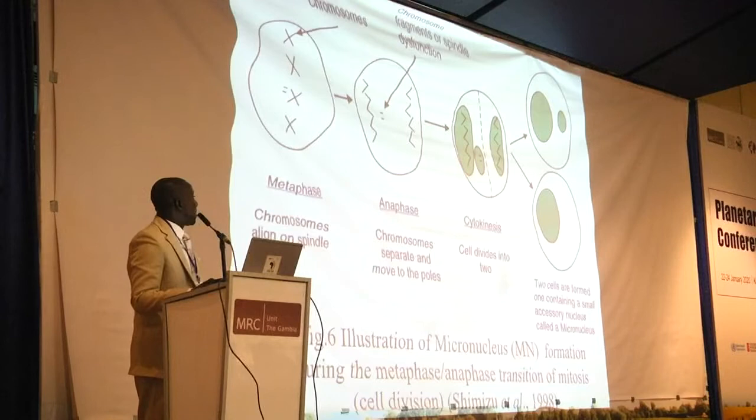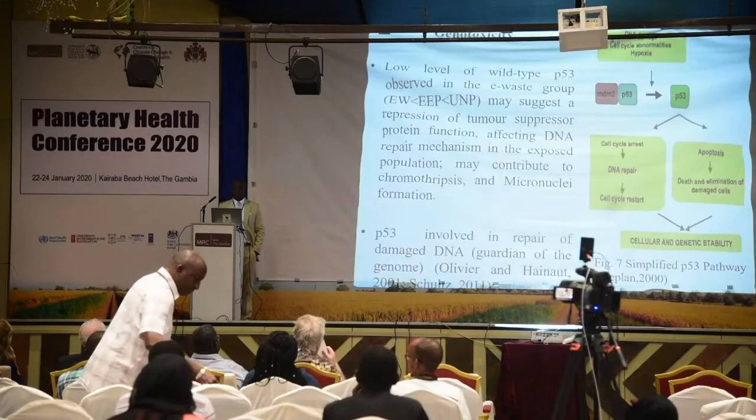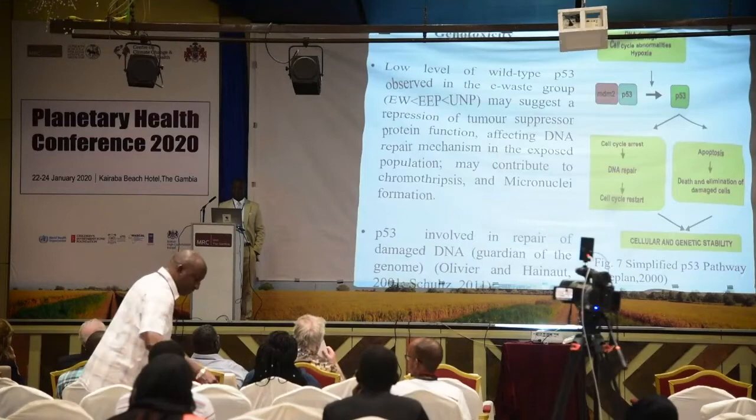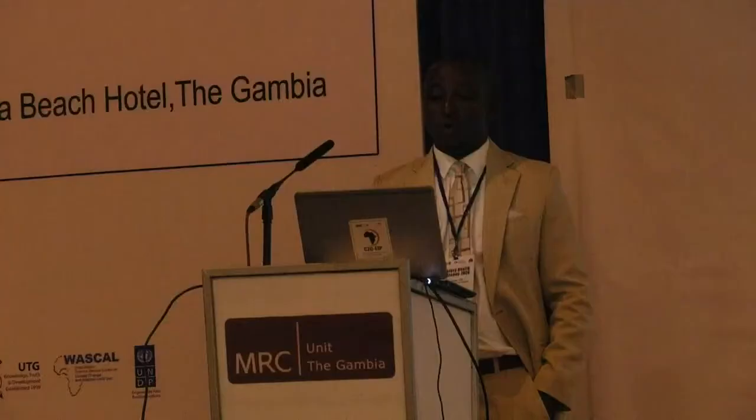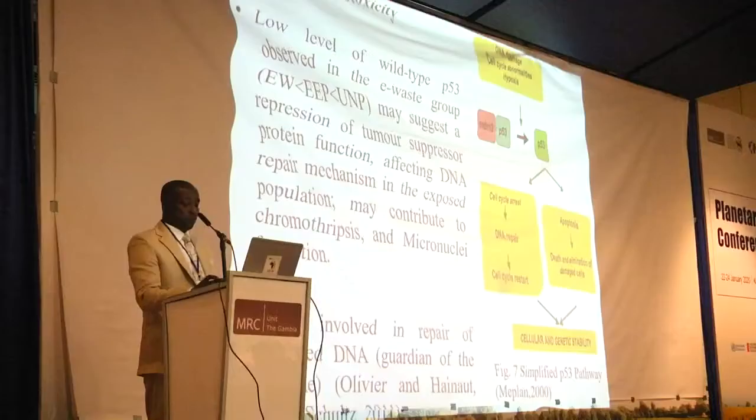The upper end product is micronuclei, while the lower is a normal cell from cell division. This often happens when there is repression of tumor suppressor protein as a result of high levels of toxicants, which leads to low DNA repair mechanism, and may contribute to chromotripsis — chromosomal reassembly — leading to micronuclei induction.